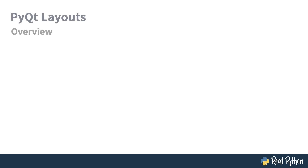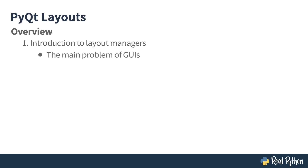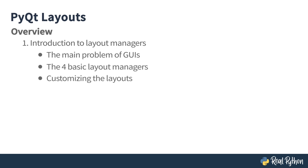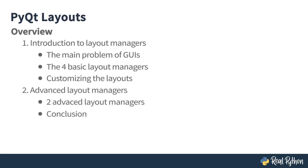Before we jump into the course, let's talk about its structure. Fundamentally, there are two major components of this course. Number one is an introduction to layout managers. In the next video, I talk about the main problem GUIs have. After that, for the next four videos, we talk about different layout managers. Then there are two more videos to talk about different ways to customize them a little bit further. Once we have all of that covered, there are going to be two more videos that cover more advanced layout managers, and then we are going to conclude this course. Let's jump into it.